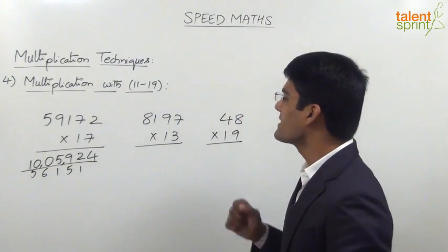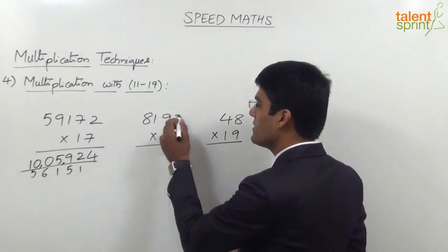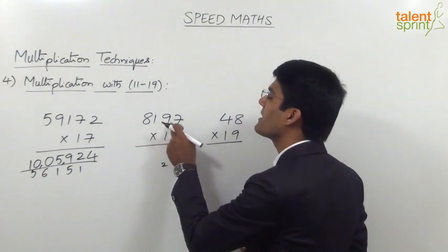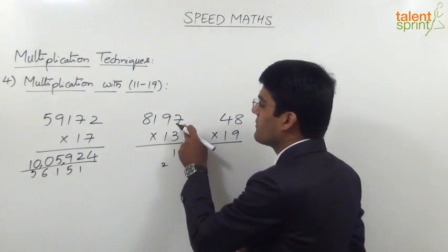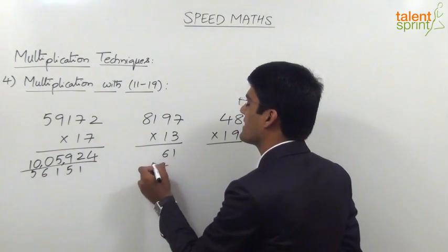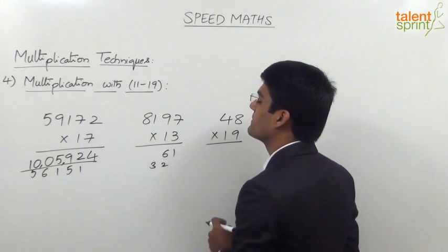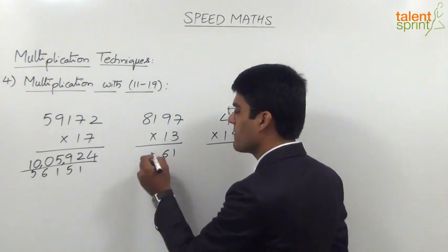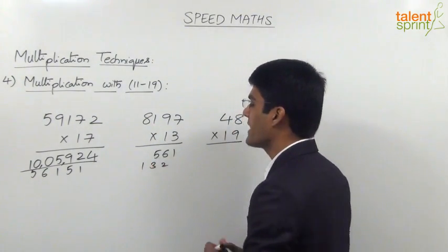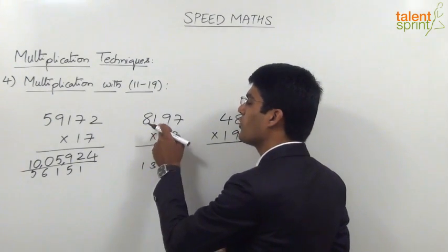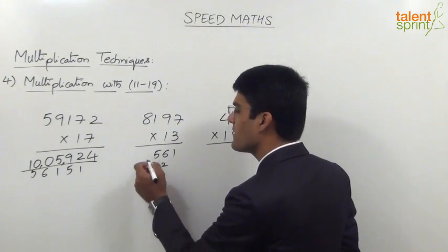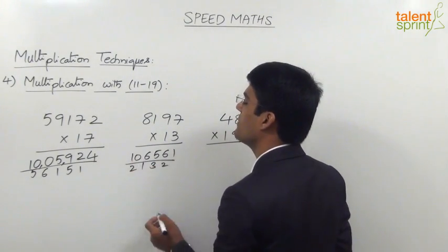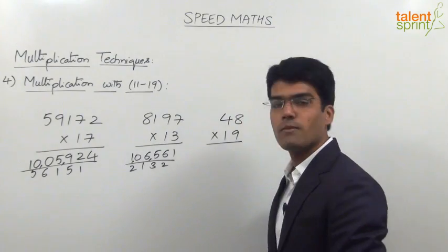The next one is 8197 into 13. So 3 into 7 is 21 — carry 2. 3 into 9 is 27, plus previous digit 7 is 34, plus carry 2 is 36 — carry 3. 3 into 1 is 3, plus previous digit 9 is 12, plus carry 3 is 15 — take 5, carry 1. 3 into 8 is 24, plus previous digit 1 is 25, plus carry 1 is 26 — carry 2. And 8 plus carry 2 is 10. So the answer here is 106561.